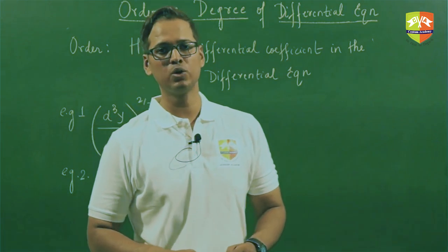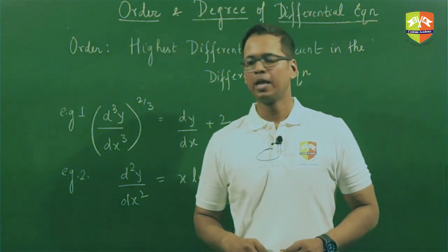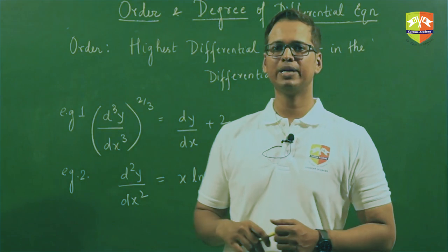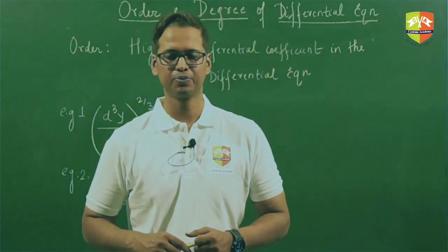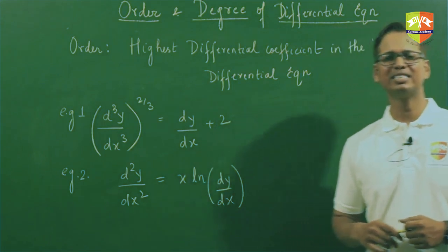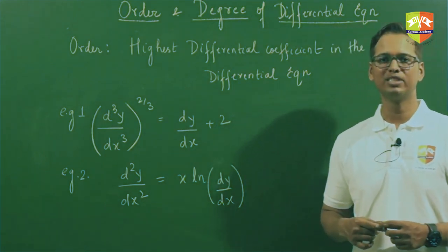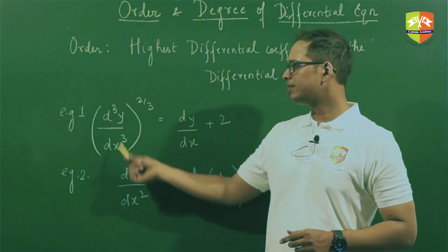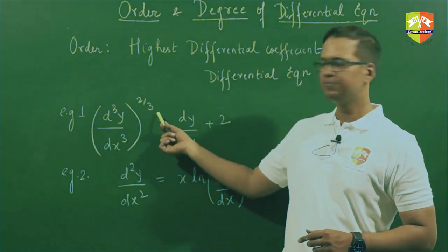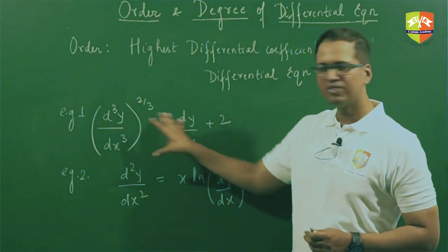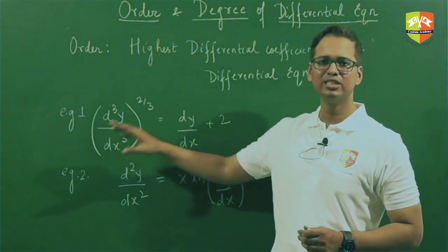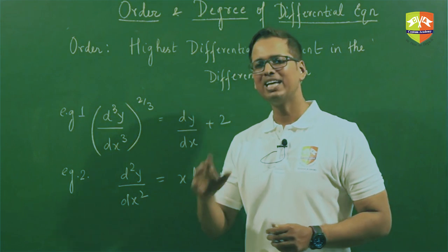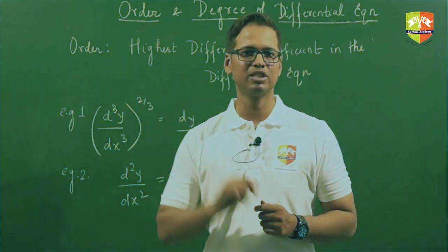Let's talk about the order and degree of a differential equation. The order of a differential equation is nothing but the highest differential coefficient of y with respect to x which occurs in that differential equation. For example one: d³y/dx³ raised to the power 2/3 equals dy/dx + 2. The highest differential coefficient of y with respect to x is 3 — meaning y has been differentiated a maximum of 3 times with respect to x.